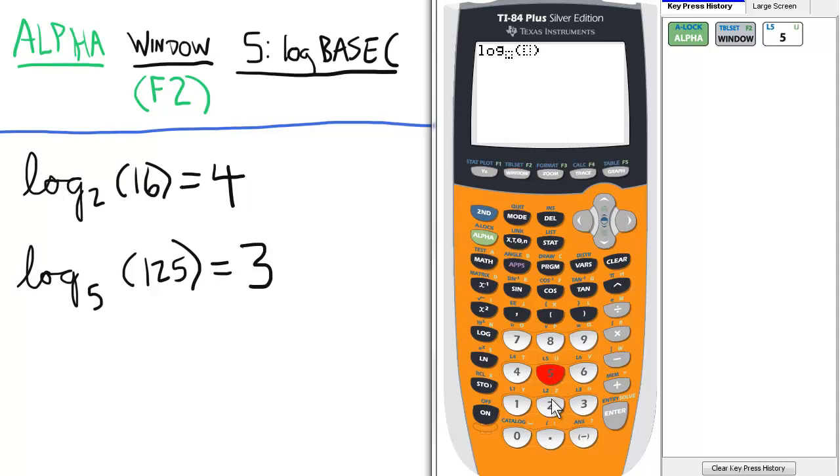Here we're going to enter 2 for the base of our log right here. And then we're going to scroll over to the parentheses, and enter 16, and press enter. So log base 2, 16 is 4.